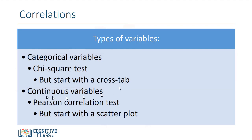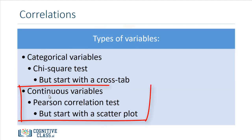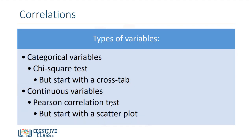But if we have two continuous variables, for example the teaching evaluation score and the beauty score of an instructor, then these are two continuous variables and they can assume any reasonable value within the range. Then we use a Pearson correlation test for those, and we usually begin with a scatter plot to see the kind or nature of the relationship between the two variables.